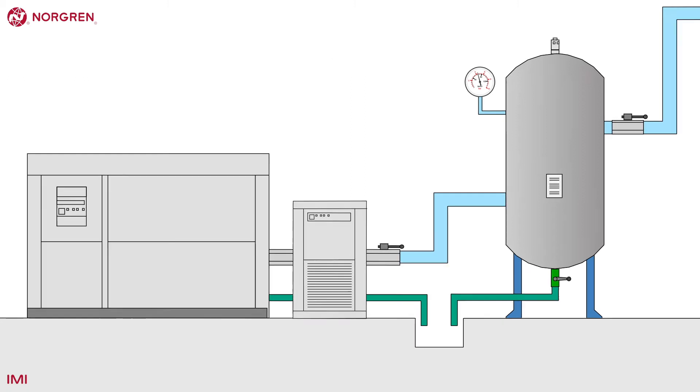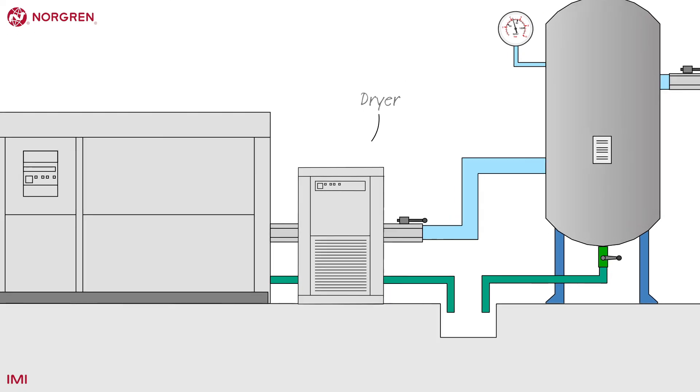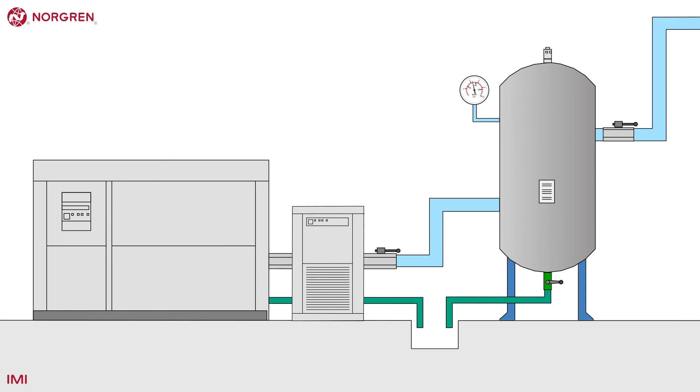In some systems there may also be a dryer fitted just after the compressor. The compressor will collect air from the local environment. It might be damp or dirty caused by high humidity or passing cars for example. The process of compression creates heat as air molecules collide more frequently.